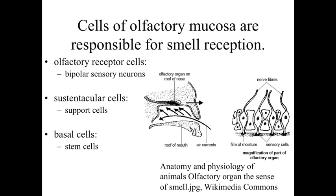The cells within the olfactory mucosa responsible for smell reception are essentially bipolar sensory neurons — olfactory receptor cells. They're able to respond to the specific shapes of molecules present within the secretions of Bowman's glands. The substance needs to be dissolved to interact with these olfactory receptor cells. There are also sustentacular cells, which are support cells surrounding the receptor cells, as well as basal cells — stem cells that can divide and produce new cells as needed for the epithelial lining.